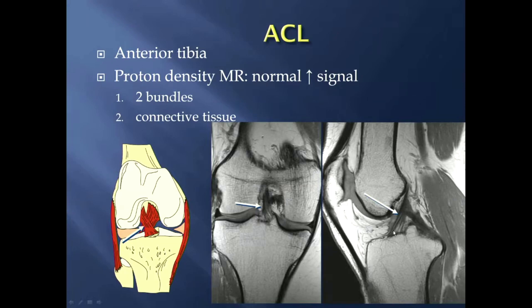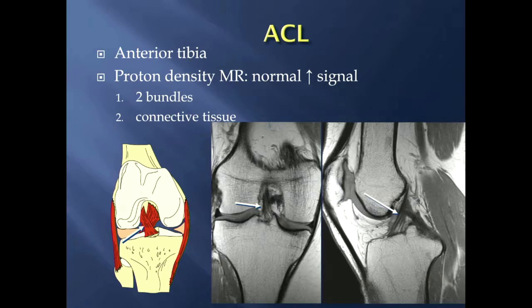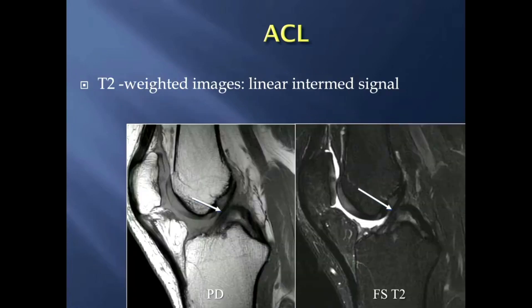On a proton density MR image — one of the most common pulse sequences we get in MR of the knee — the ACL normally has increased signal within it, mostly striations, and that is due to two reasons. One is that there are two bundles of the ACL. On T2-weighted MR images, that signal darkens a bit, but it's still intermediate signal.